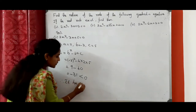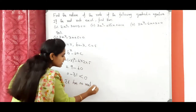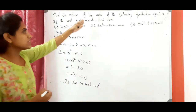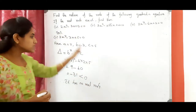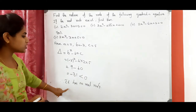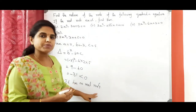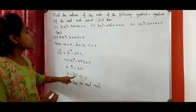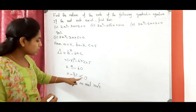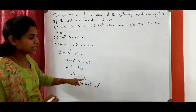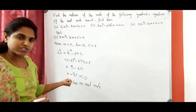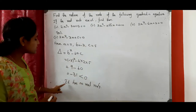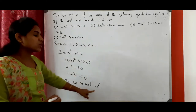The real roots do not exist, so there is no need to find the roots. This is the nature of the roots. First, we found the discriminant of the quadratic equation, then checked whether it is positive, negative, or equal to 0. Here it is negative — less than 0 — so the nature of the roots is no real roots.